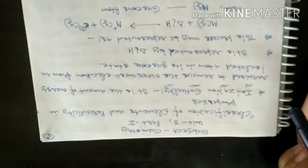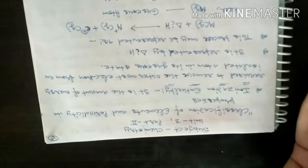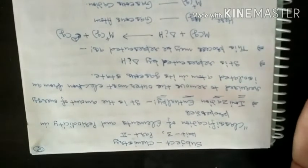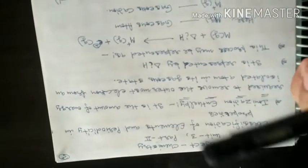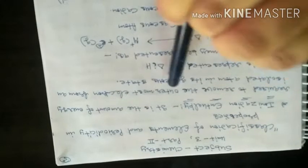Our first topic is ionization enthalpy. Ionization enthalpy and ionization energy — what type of energy is this? This is the minimum amount of energy which is required by any atom or element to remove the electron from the outermost shell.